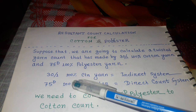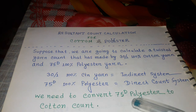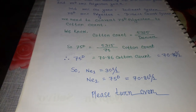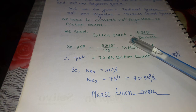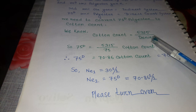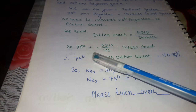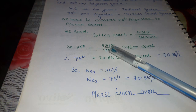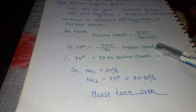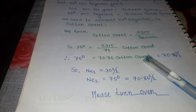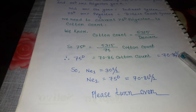We need to convert 75 denier polyester to cotton count. We know that cotton count equals 5315 divided by denier. So 75 denier equals 5315 divided by 75, which gives us 70.86 cotton count. That means 75 denier equals 70.86 single cotton count.